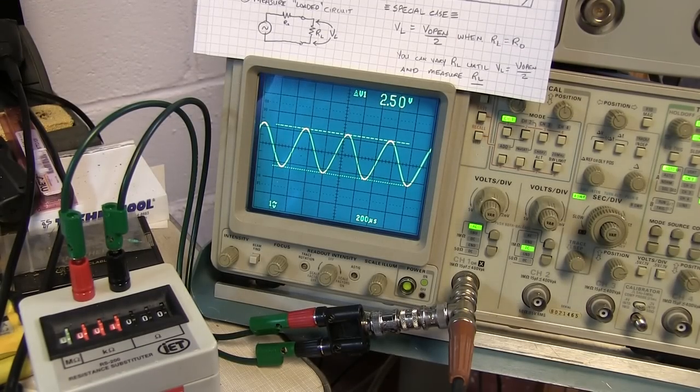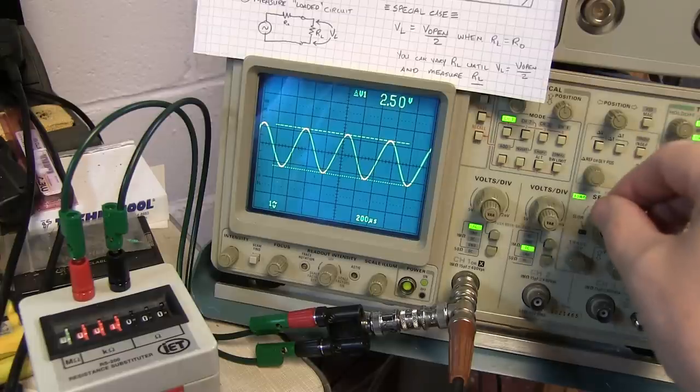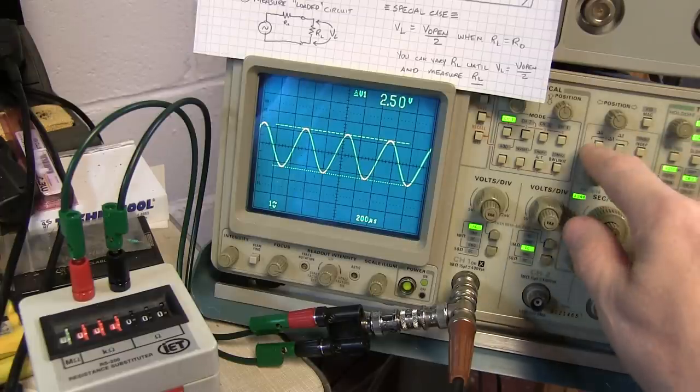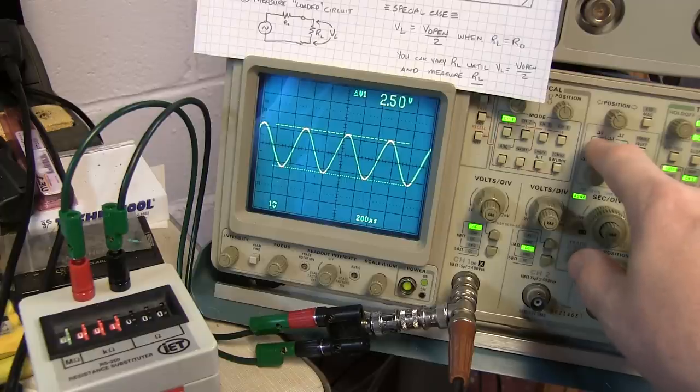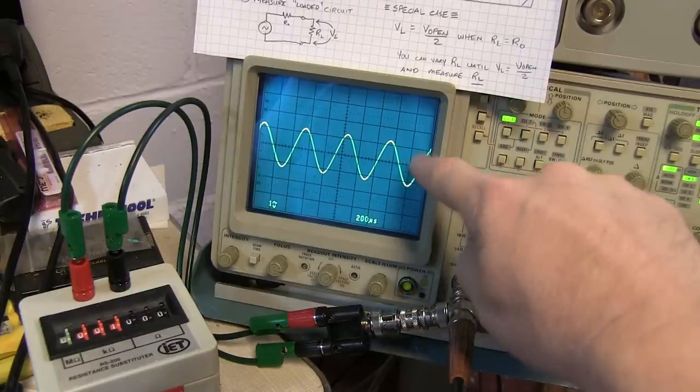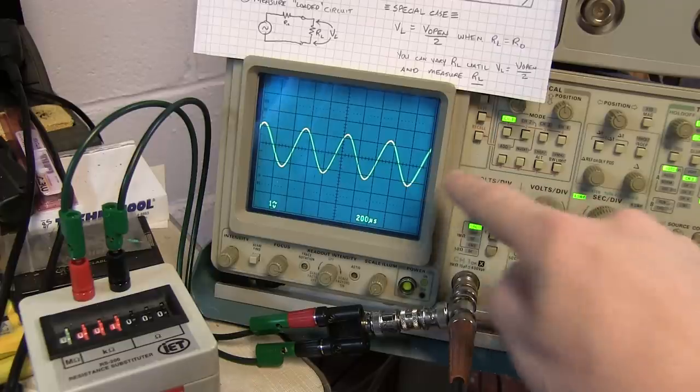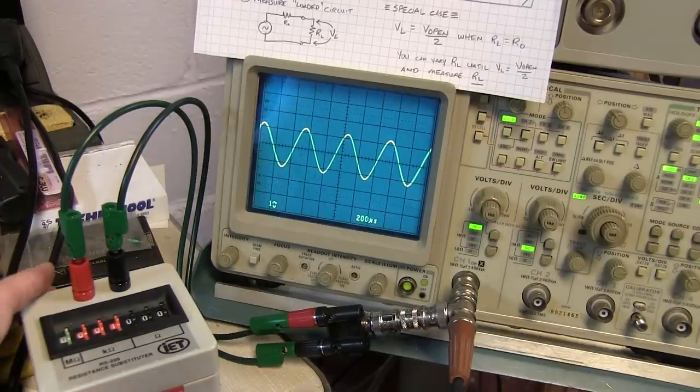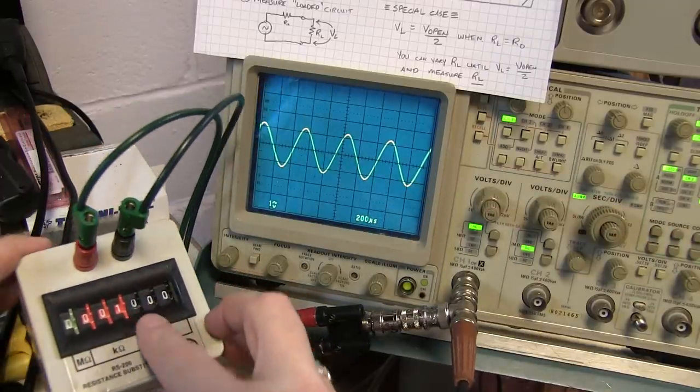Alright we already know that our open circuit voltage was four volts peak to peak and we want to go down to two volts peak to peak because that'll be when the load impedance equals the output impedance. I'm going to turn off the voltage cursors here because since we're sitting at one volt per division all I need to do is adjust my load until I get just two divisions of deflection.